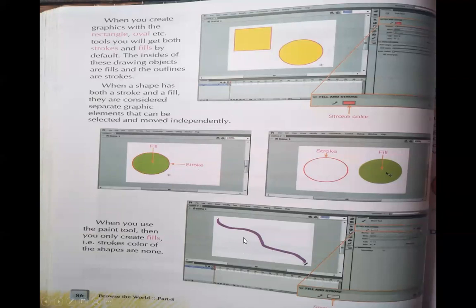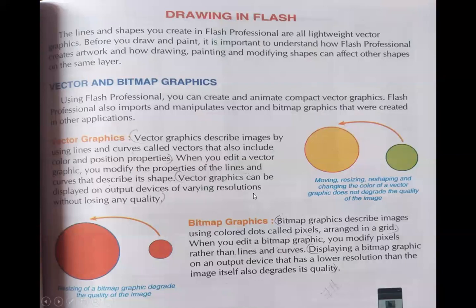In Flash, we can create lightweight vector graphics. It is important to understand how Flash Professional creates artwork and how drawing, painting, and modifying shapes can affect other shapes in the same area. When making a vector drawing, we need to understand how we can draw, paint, or modify. There are two different types of graphics: the first is vector graphic, and the second is bitmap graphic.